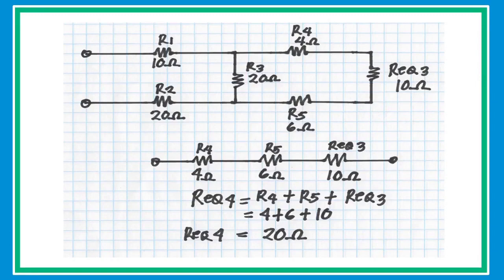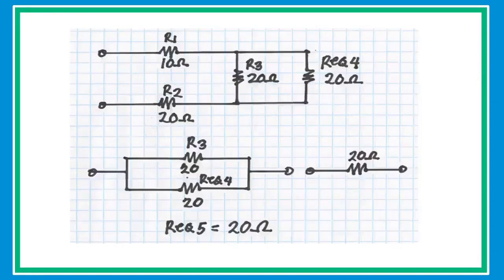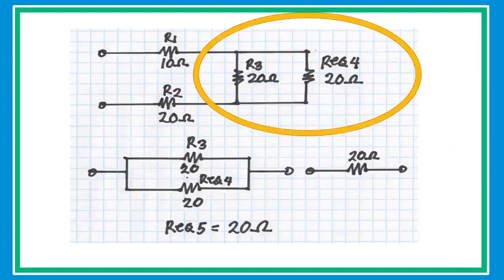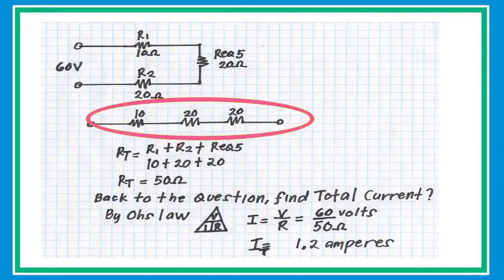Collapse and redraw again to simplify. In the new redrawn circuit, R3 and R4 are connected in parallel with the same value, so simply take half to get an equivalent resistance of 20 ohms. In the final circuit, R1, R2, and R_equivalent 5 are simplified into a series circuit. Add the three resistors to get a total value of 50 ohms.